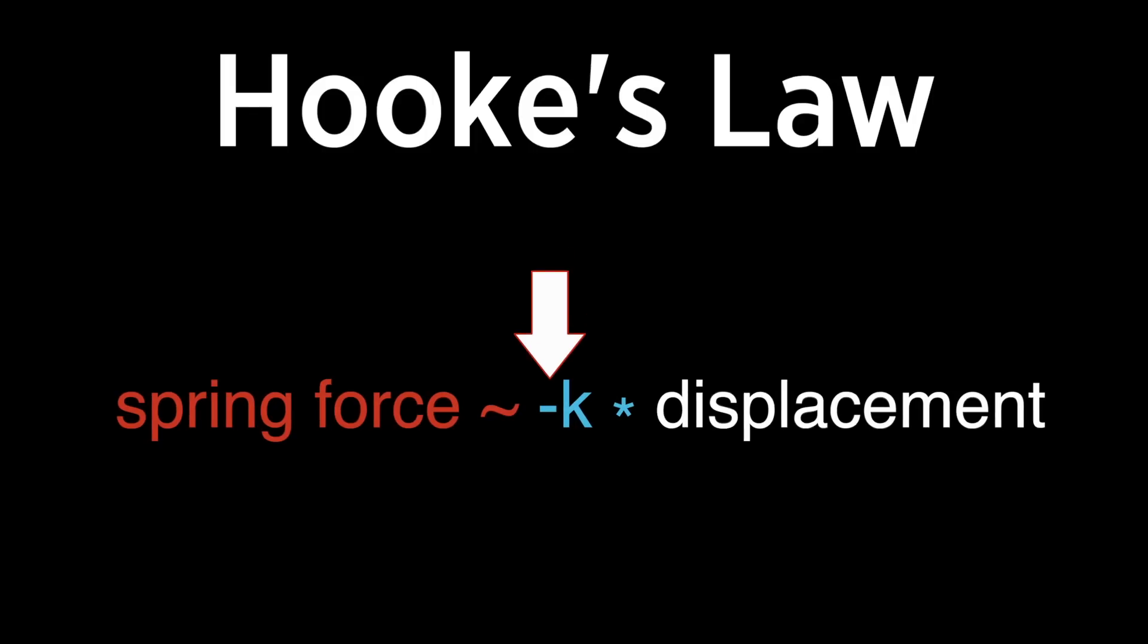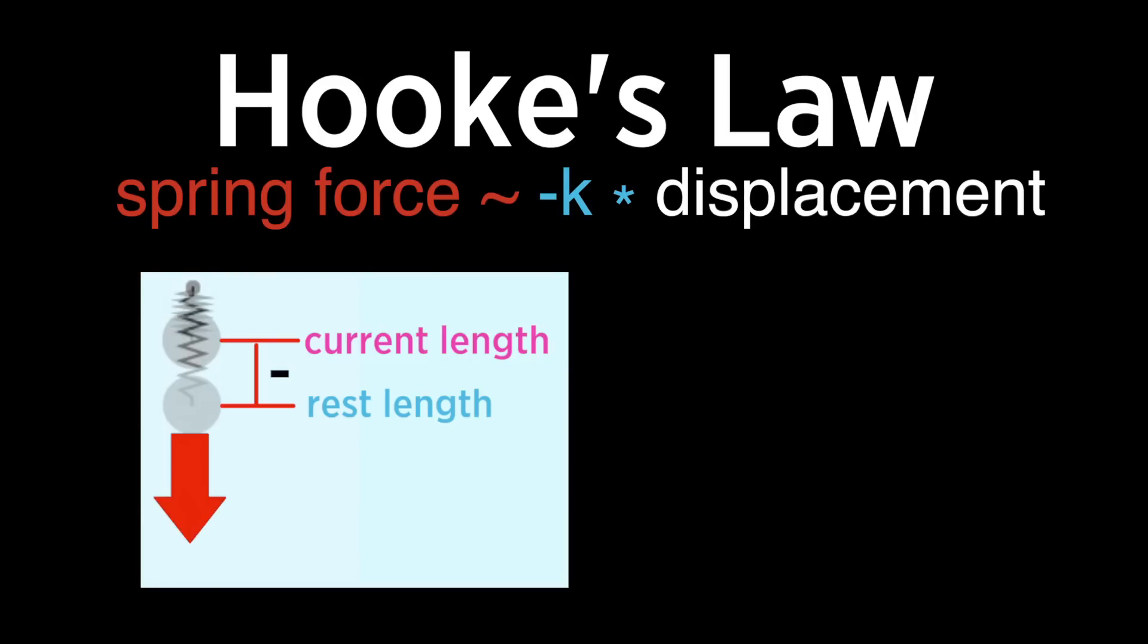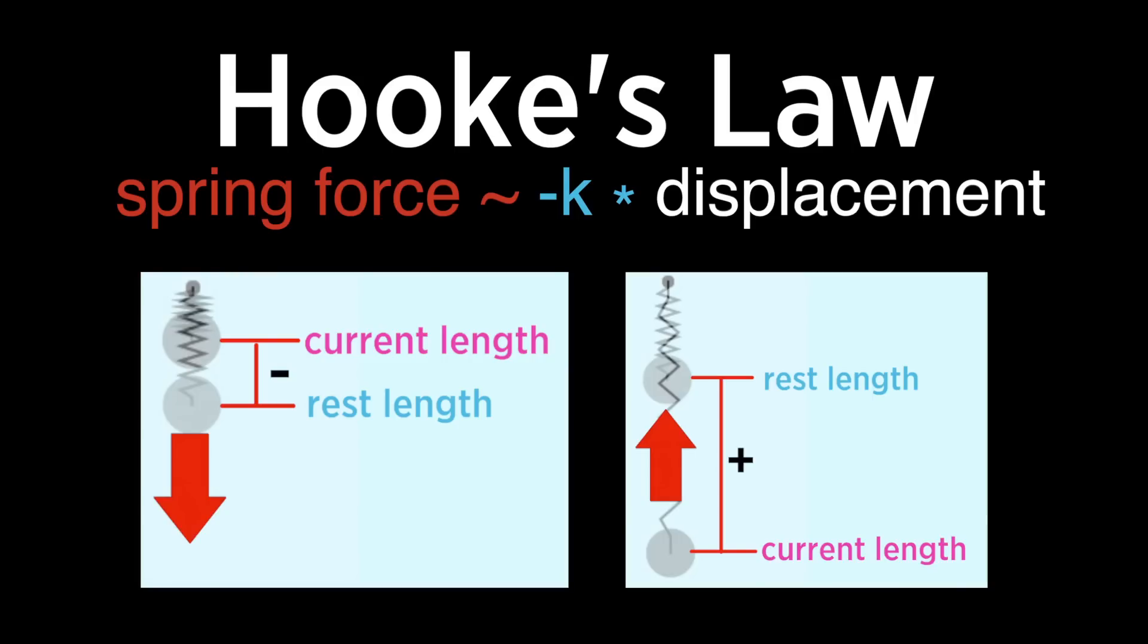Notice that there is a negative sign there. That's because we want a positive force when the displacement is negative and a negative force when it's positive. If we plug this equation into the computer, we get this realistic spring behavior.